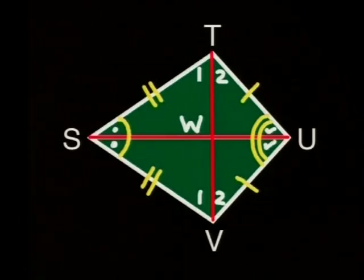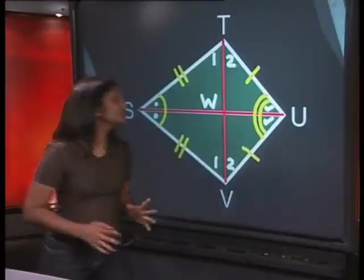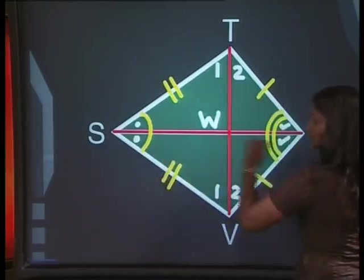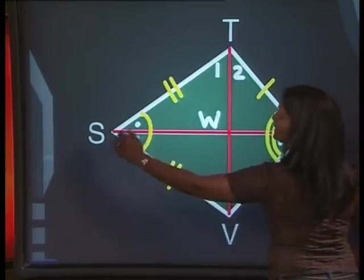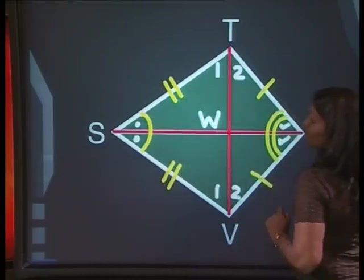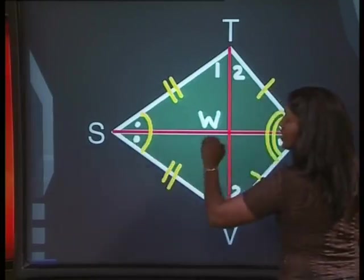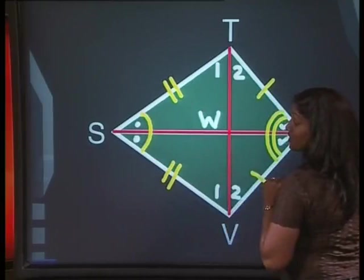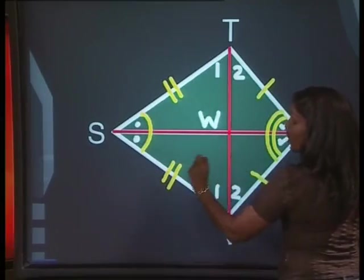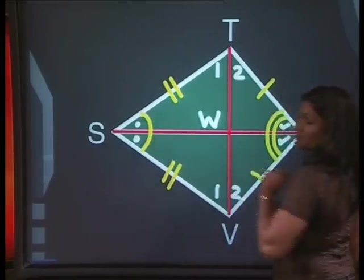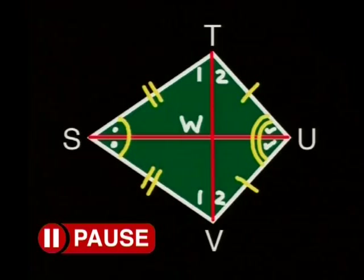Without actually measuring the angles, how can we tell? Let's use what we know about congruent triangles. Let's look at triangle STW and triangle SVW. We know that SV is equal in length to ST. We know that this angle at S is equal to this angle at S. And we also know that SW is part of both these triangles. So, this triangle STW is congruent to triangle SVW because of the reason side angle side.